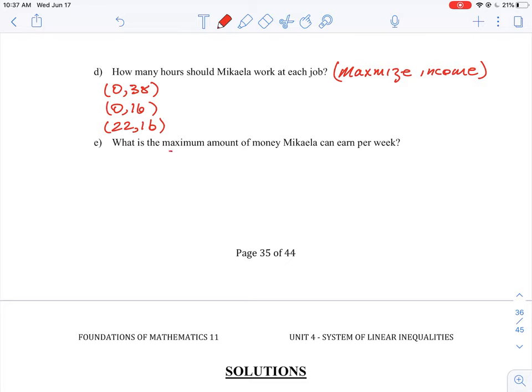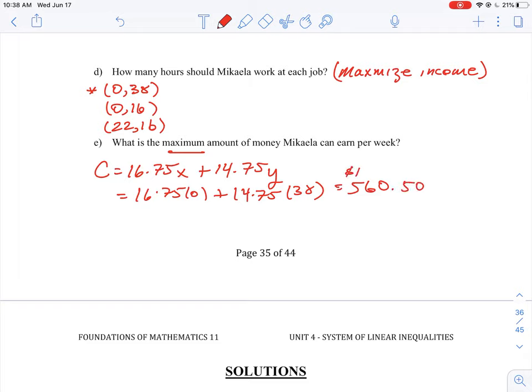So what is the maximum amount of money that Mikaela can earn per week? So what we want to do is maximize our objective function. So if we bring the equation down that we wrote previously: 16.75x plus 14.75y. If we look at our first two coordinates here, both x's are going to be zero. So if we were to look at the first pair, this is going to be 16.75 times zero plus 14.75 times 38. So all we have to do is multiply 14.75 times 38 and that's equal to five hundred and sixty dollars and fifty cents. So that's how much we could make by just working at the one job.